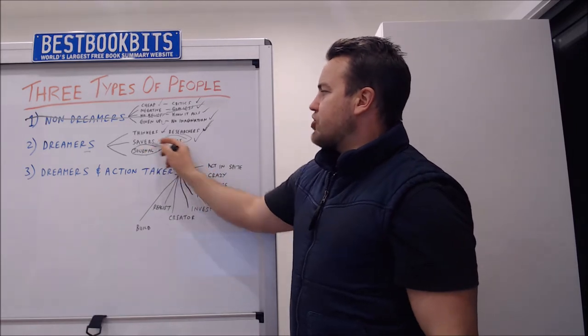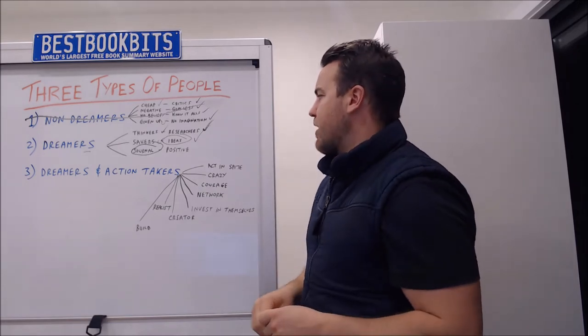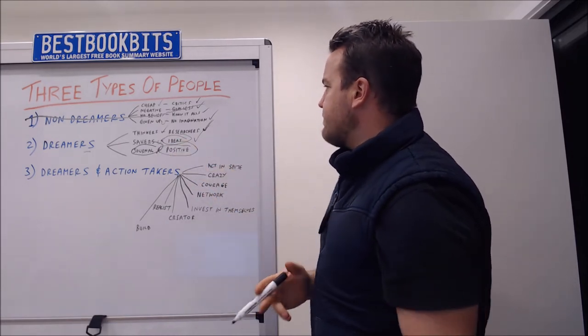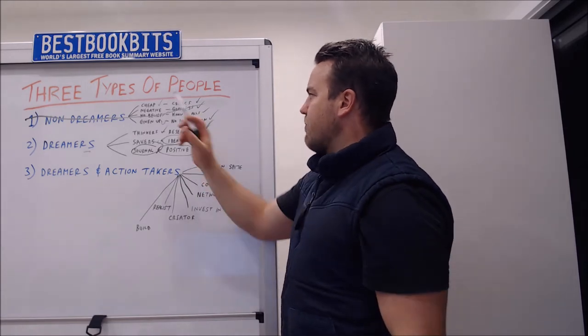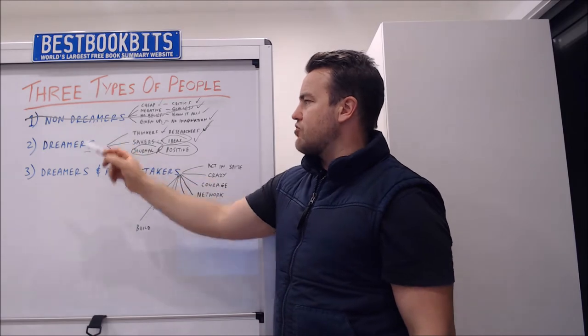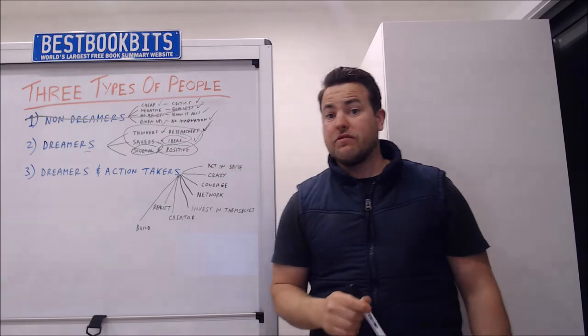Another characteristic are people that journal. So if you journal you are a dreamer because you're thinking a lot and you like to journal and get it out of your head as do I. So journalists. And look, being positive is there as well. So it obviously beats negative. So as you can see here there's two characteristics, non-dreamers and dreamers. There's a massive correlation of difference between dreamers and non-dreamers as well.